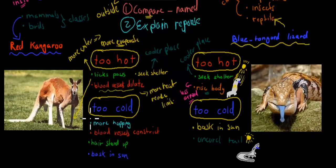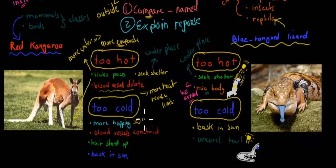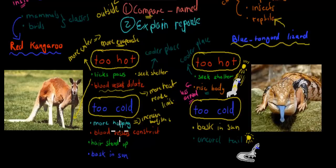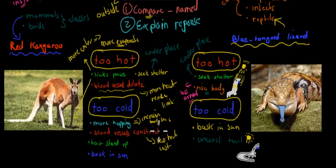When it's too cold, the red kangaroo will do more hopping — more physical activity. Just like when we go for a run and become hot, if the kangaroo hops around more it will increase its body temperature. Its blood vessels also constrict, which is the opposite of dilation — the vessels become smaller so less heat is lost to the surroundings. This is useful when it's too cold because the kangaroo needs to retain heat.